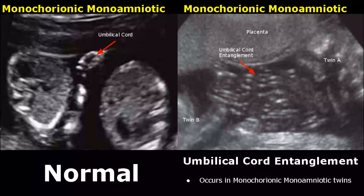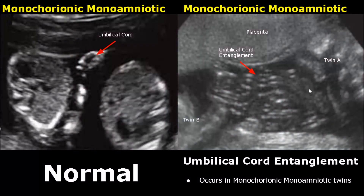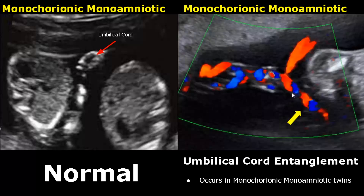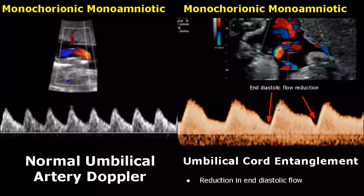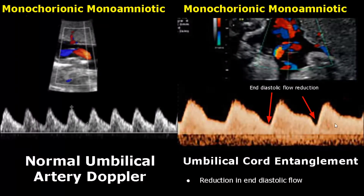Umbilical cord entanglement can occur in monochorionic monoamniotic twins. The cords of both twins form a knot as they entangle. We can confirm umbilical cord entanglement using color Doppler, which clearly shows the entwined umbilical cord. On pulsed wave Doppler, reduction in end diastolic flow is seen, with a notch in the end diastolic waveform.